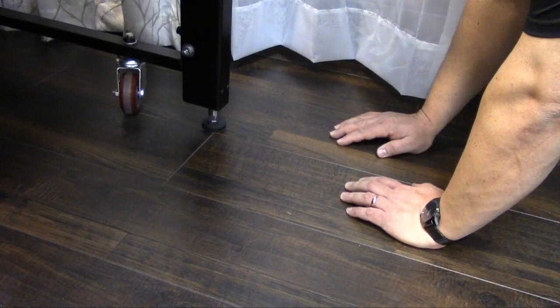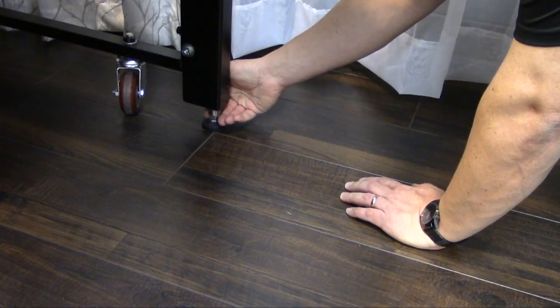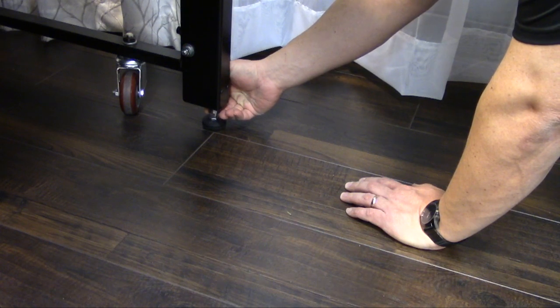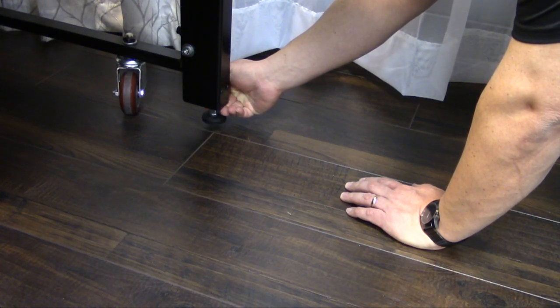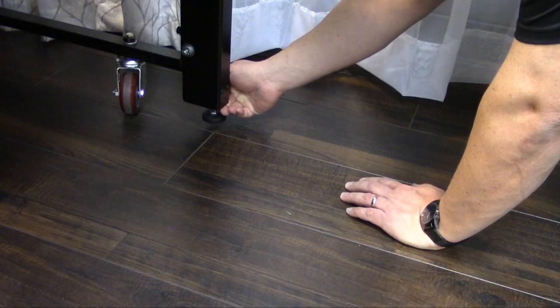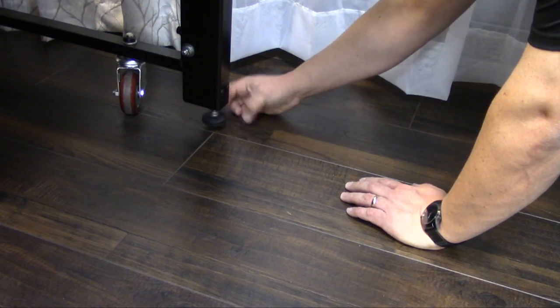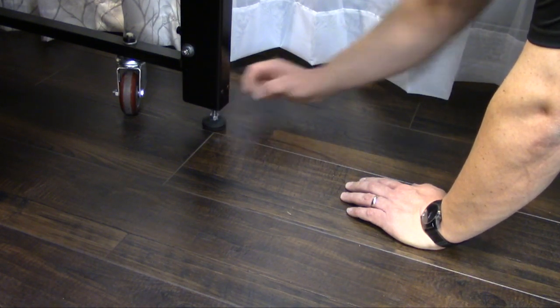To lengthen a leg that's too short, just press up on it and it'll slowly move up as the fluid is forced back into the pump. Now you can spin the foot to make it longer.